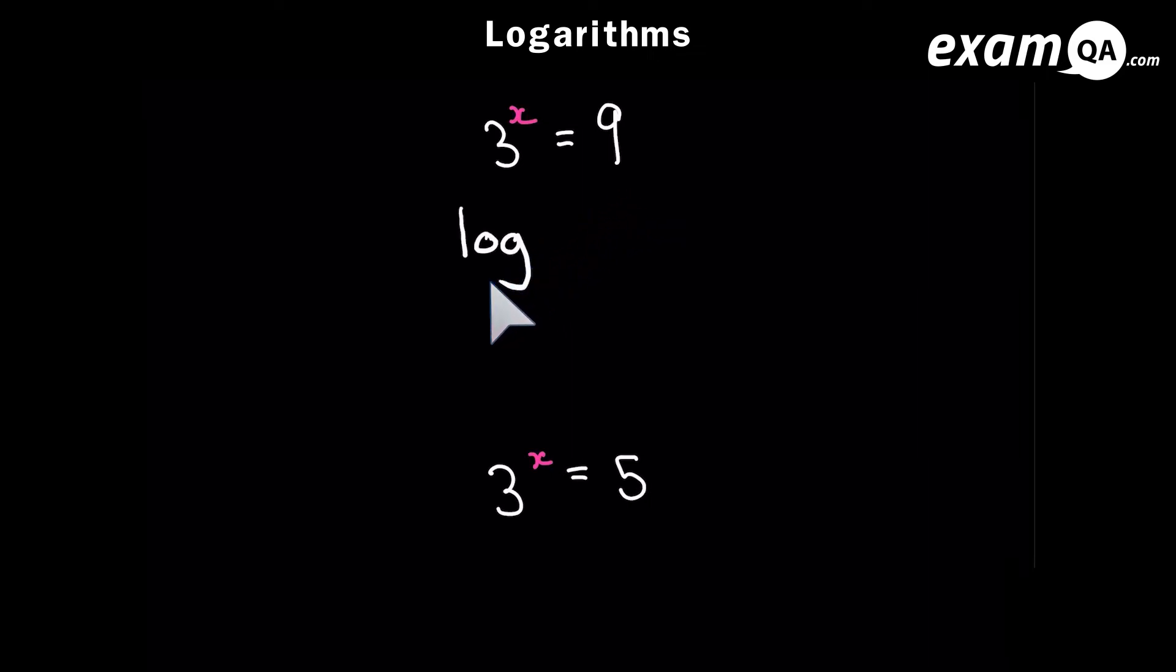So we start off by writing log, then we write the base, and the base is going to be the 3 and we write it in a slightly smaller font. Then write the 9 in slightly bigger font and this would equal to the power, the x. So now we know x is log base 3, 9, and this you can simply put in your calculator, and when you put log 3, 9, the calculator will give us 2. Of course in this case we knew that x equals 2.